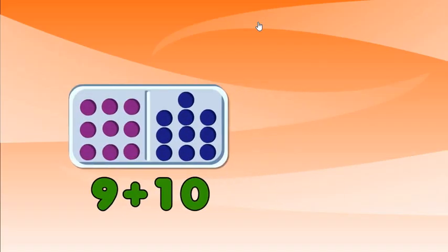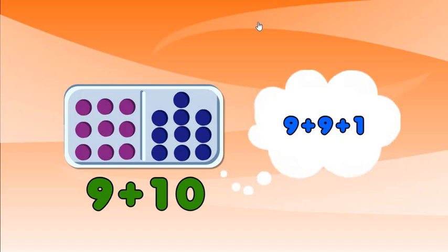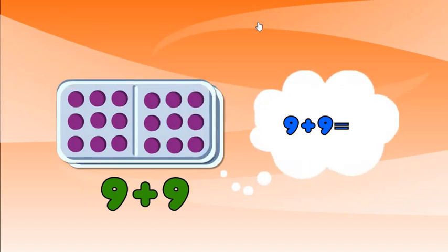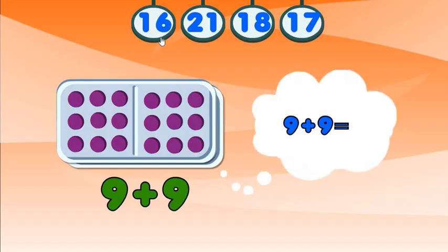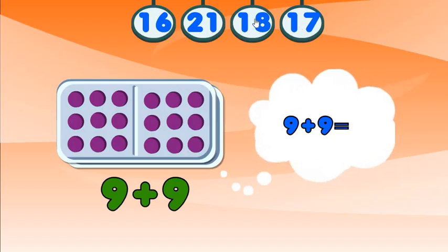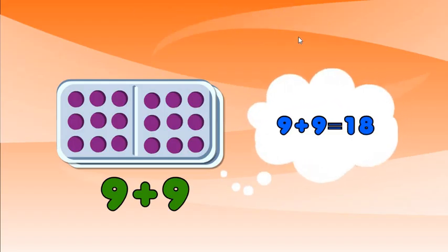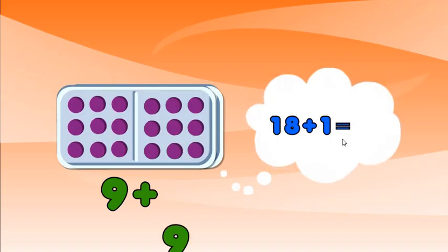Think double 9 plus 1. What is double 9? Double 9 is 18, so now add 1. Find the answer to 18 plus 1.